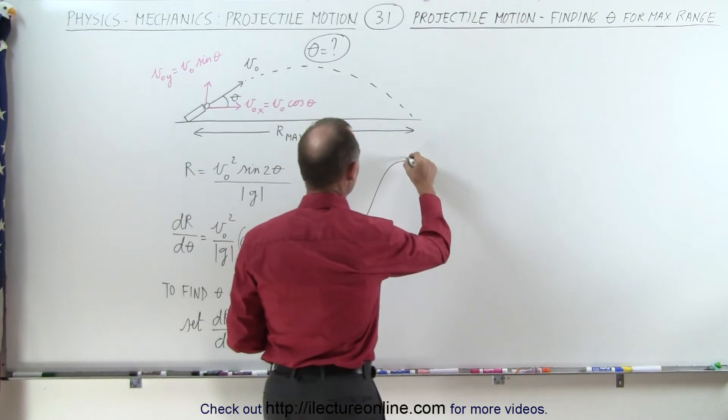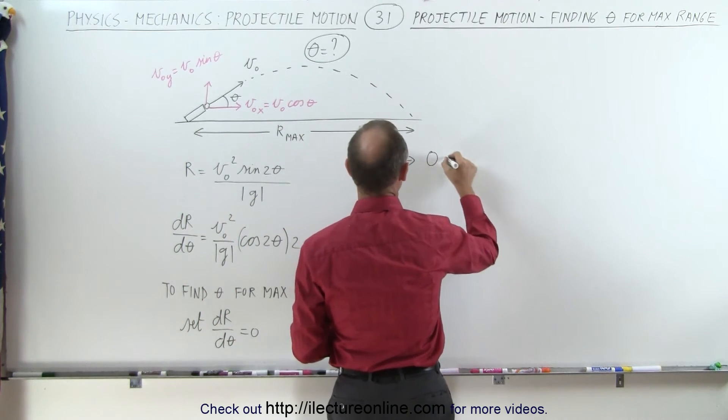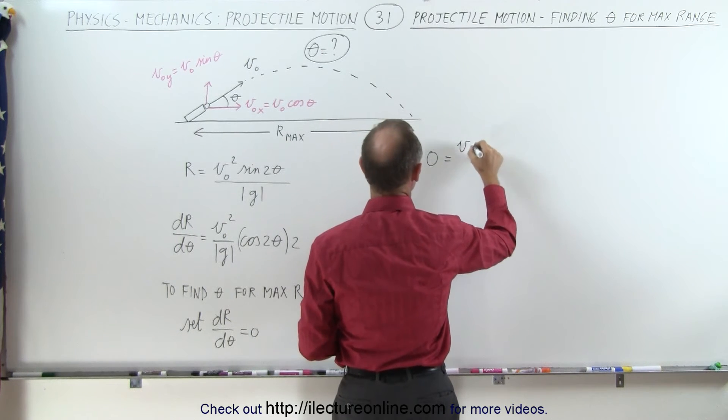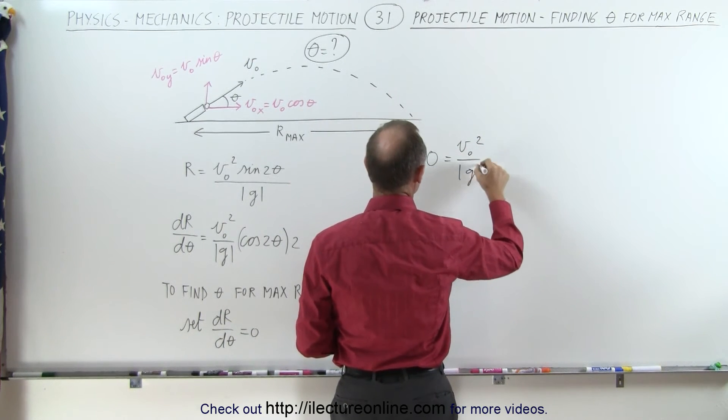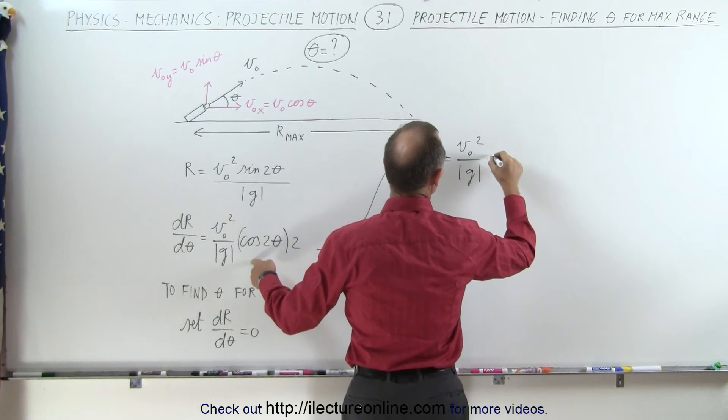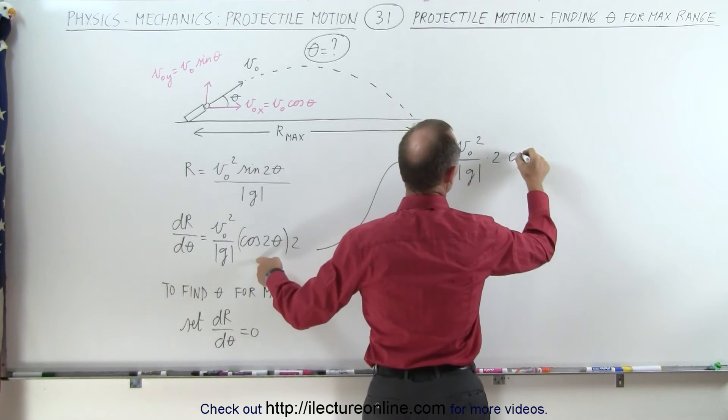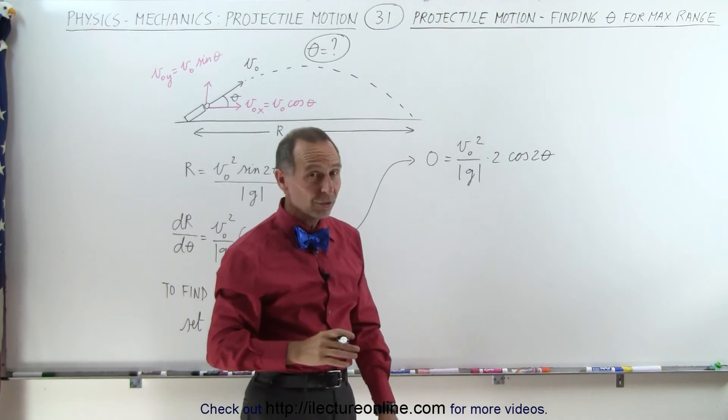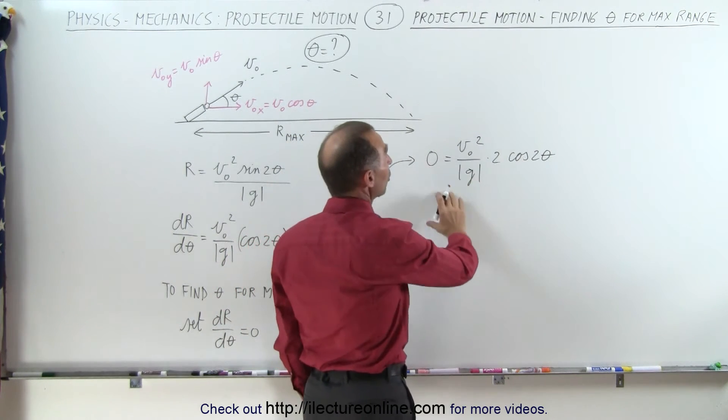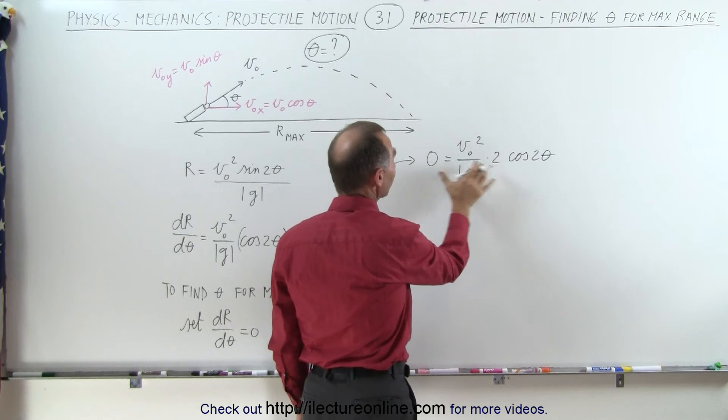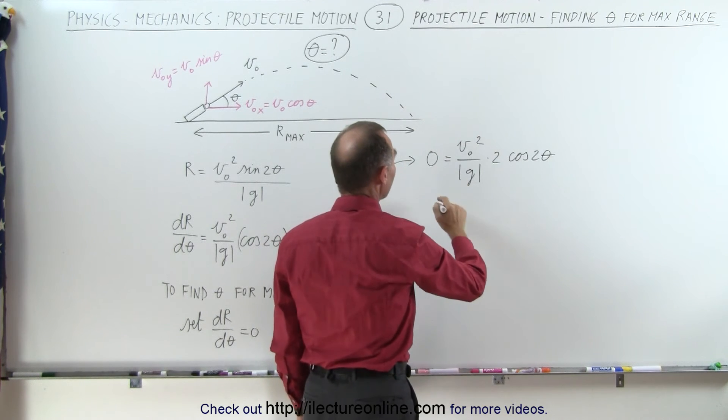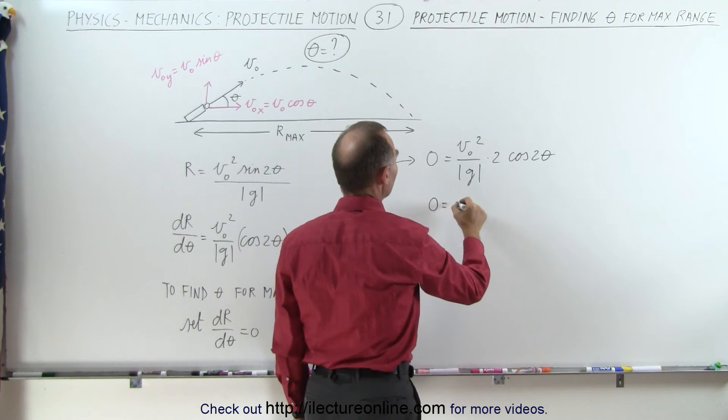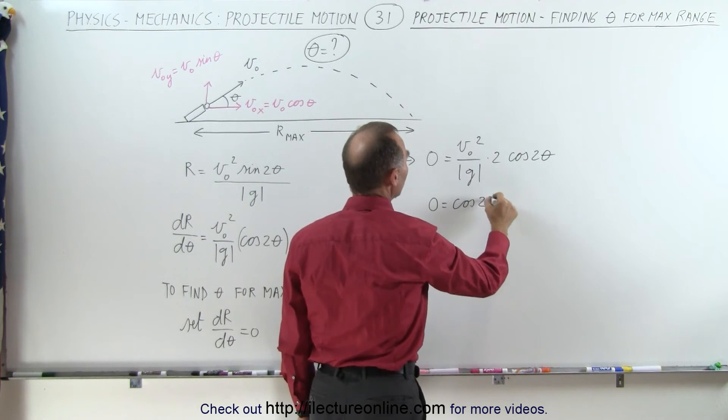When we do that we get the following. We get 0 is equal to v initial squared divided by the absolute value of g times 2 times the cosine of 2 theta. Of course when something is set equal to 0 all the constants can go to 0 because we can divide both sides of the equation by this constant, which means that 0 is equal to the cosine of 2 theta.